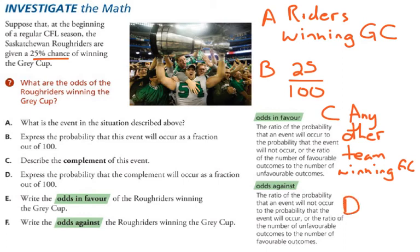Part D asks for the probability of the complement. If 25 out of 100 times they will win the Grey Cup, then 75 out of 100 times they won't.